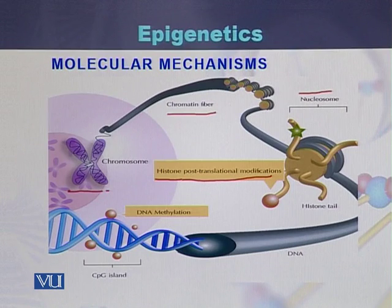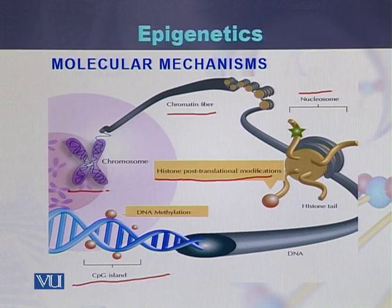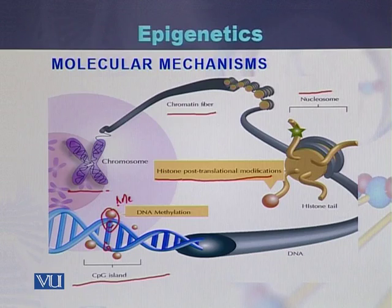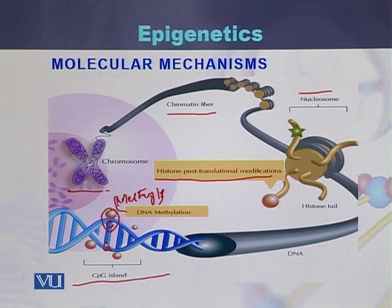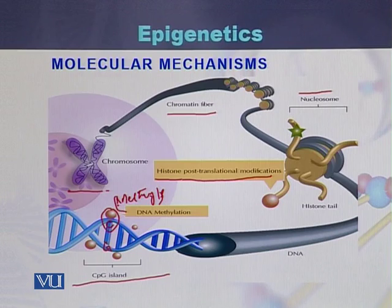On the other hand, in the case of the DNA sequence, we can see that our DNA is methylated. Here is C and here is G, and C is methylated — a methyl group is attached to the cytosine of the DNA. So there are two basic mechanisms by which epigenetics occur: histone post-translational modifications and DNA or cytosine methylation.